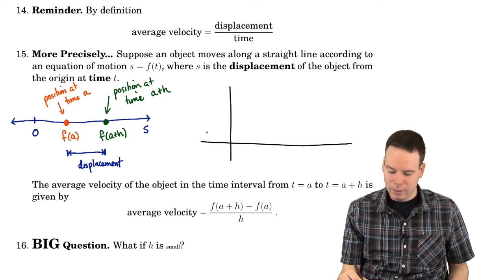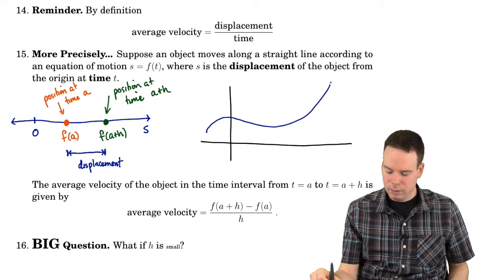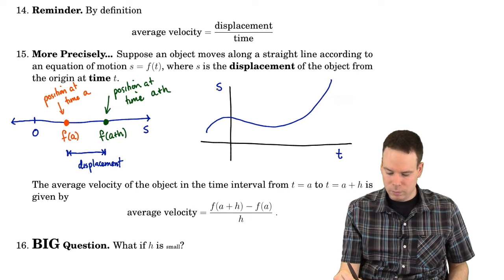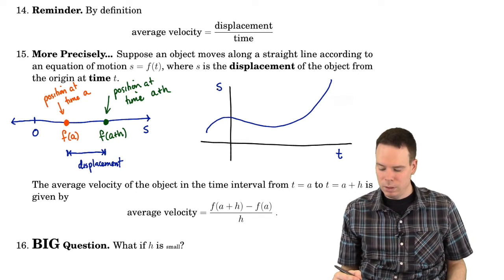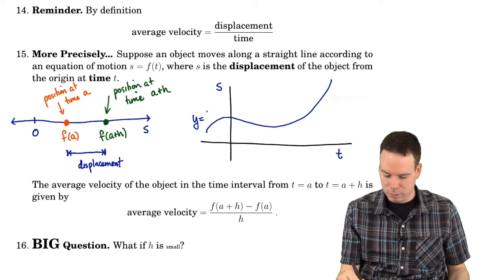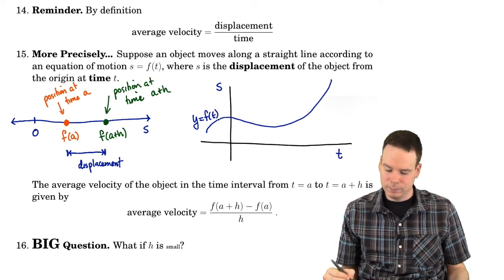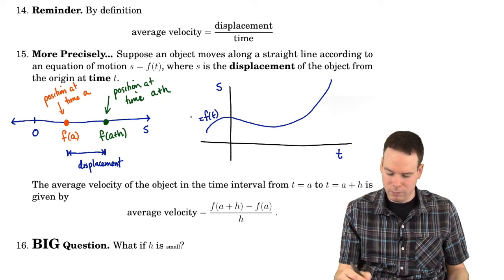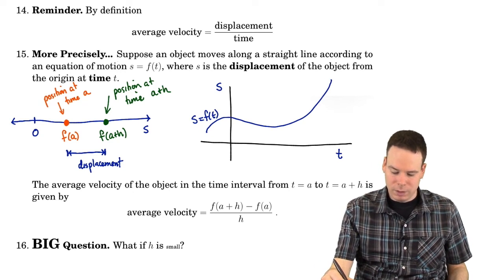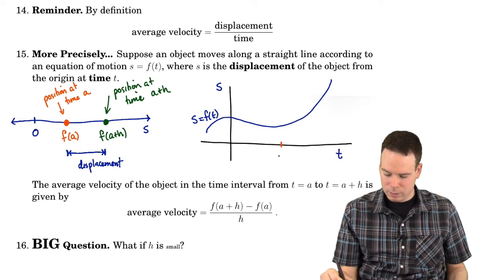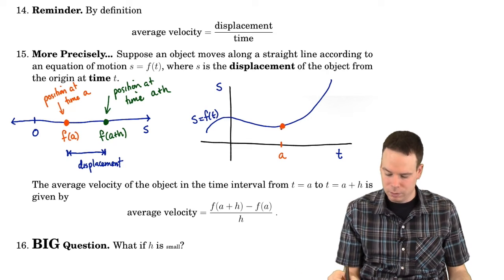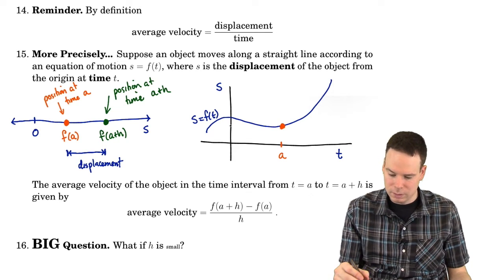There's another way to look at this and that is by explicitly sketching the relationship between t and s as the function, s equals f of t. And we can put the same sort of bits of information at some time a. Here's the position of the particle.